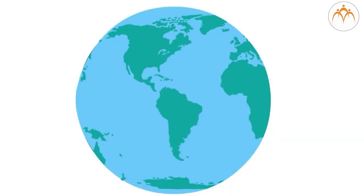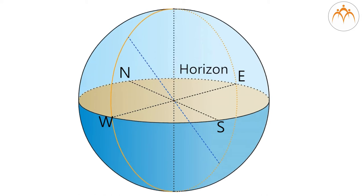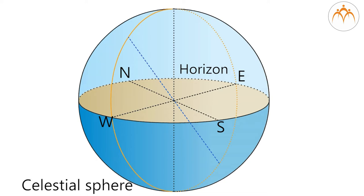Let us know about some basic concepts important before we start sky observations. The sky appears to be a hemisphere from the earth. The line where the sky seems to touch the ground is known as the horizon. When we turn around ourselves we can see a circular horizon, which divides the virtual sphere in two halves. The stars and planets appear to move on this imaginary sphere called the celestial sphere.